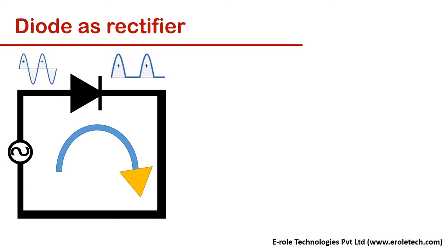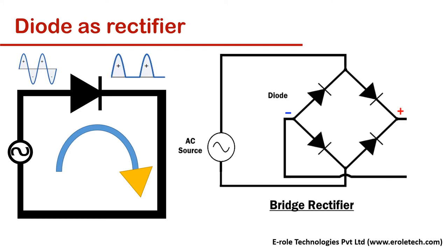When we use 4 diodes in this configuration, it allows the positive cycle of AC current and converts negative cycle into positive supply. This is called full wave bridge rectifier.